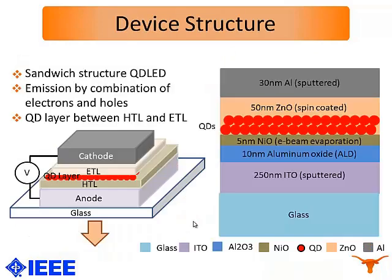The device structure we are using is a sandwich structure in which the quantum dot layer, which is the emission layer, is sandwiched between an electron transporting layer and a hole transporting layer. We supply voltage to the cathode and the anode, and we are fabricating the LEDs on a glass substrate with emission through the glass substrate. So all the layers below the quantum dot layer and between the glass layer and the quantum dot layer have to be transparent. For the anode we are using a 250 nanometer thickness ITO layer which is sputtered, and we can thermally anneal the ITO layer to get the resistance we need depending upon the thickness of the hole transporting layer and the ETL.